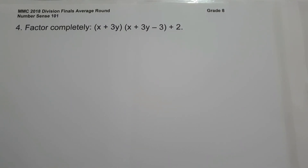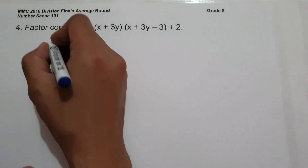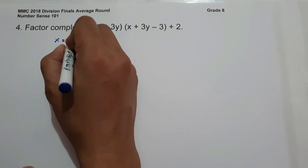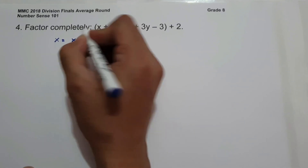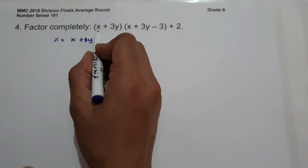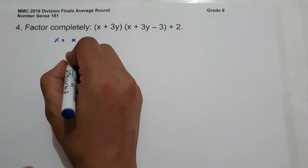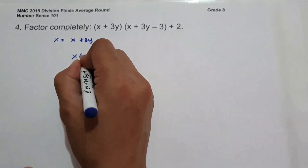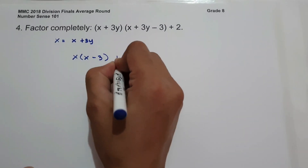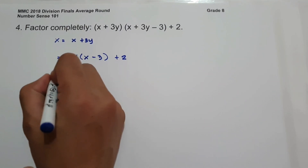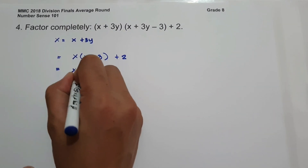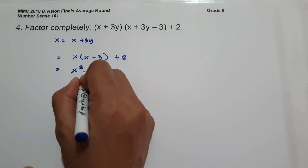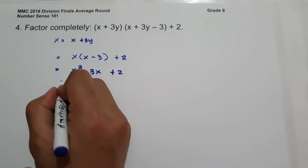On number 4, factor completely the quantity x plus 3y times the quantity of x plus 3y minus 3, plus 2. To find the factor of the given expression, let us represent x plus 3y as x. So we have x multiplied by x minus 3, plus 2. Expanding: x times x is x squared, and x times negative 3 is negative 3x, plus 2.